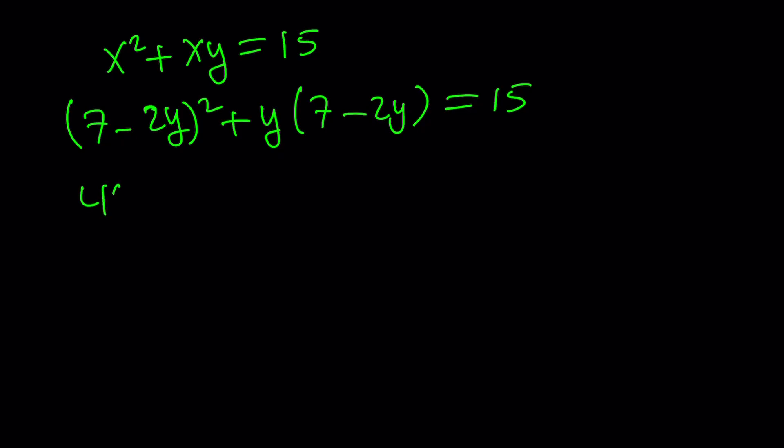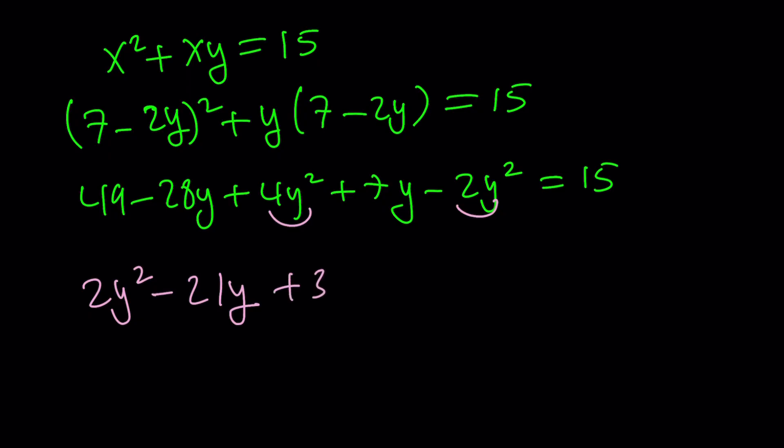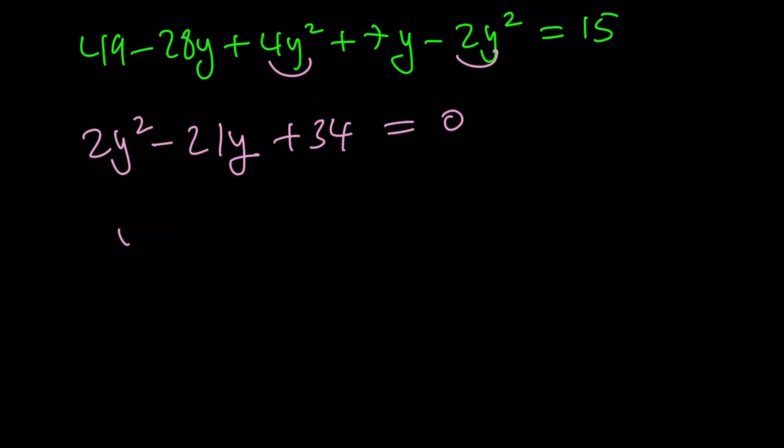Let's expand. 49 - 28y + 4y² + 7y - 2y² = 15. At least the numbers are much smaller than the other one, right? The first method was kind of crazy because numbers were too large. So, 2y² and then we get -21y. 49 - 15 is 34. We still got large numbers, but I think it's manageable. 21², at least I know what it is. Let's set up the quadratic formula.